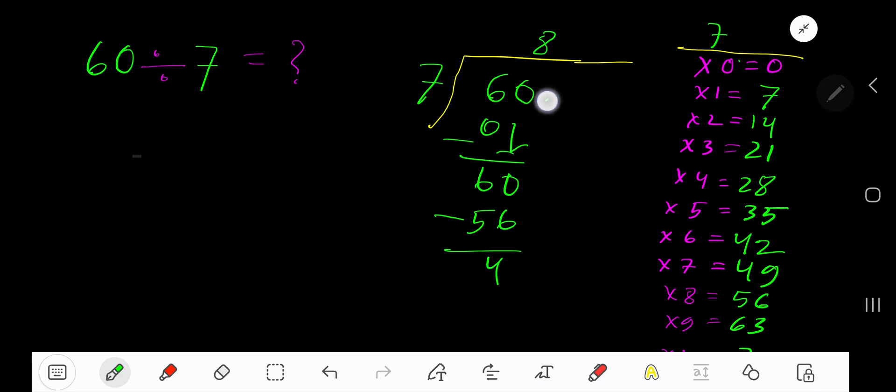If you want to write your answer in decimal form, add zeros and bring down the first zero. Before this zero there is a decimal. The decimal must come to the quotient directly above. 7 goes into 40 how many times?